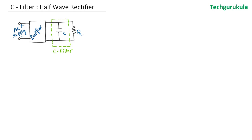As capacitor is open circuit for DC, we have connected it in parallel to the load resistor. When the DC component is coming, it goes directly to the load resistor. The output of the rectifier has a current that is both AC plus DC. For DC, capacitor is an open circuit, so the DC current would flow through the load resistor. In this case, this capacitor and resistor are like a current divider network.